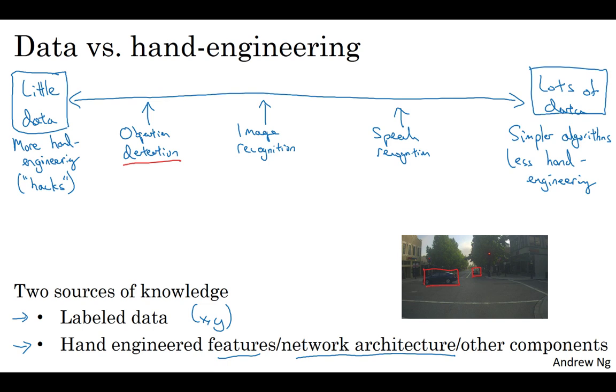I think computer vision is trying to learn a really complex function. And it often feels like we don't have enough data for computer vision. Even though datasets are getting bigger and bigger, often we just don't have as much data as we need.